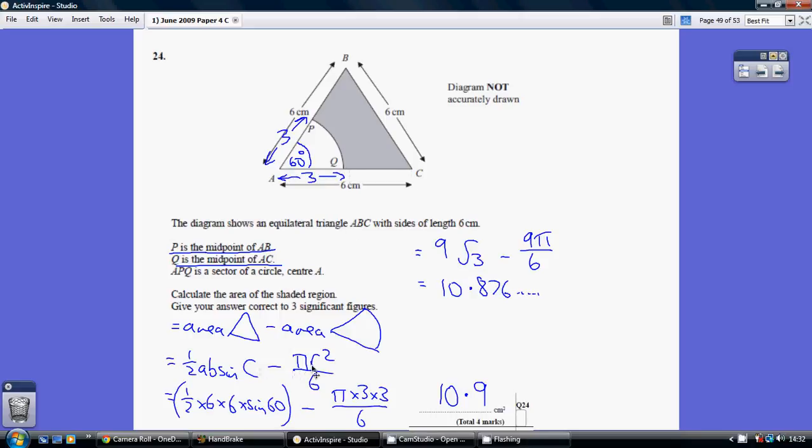So it's π times 3 times 3 all over 6. Pop that into our calculator. We get this, which rounds to 10.9 to 3 significant figures.